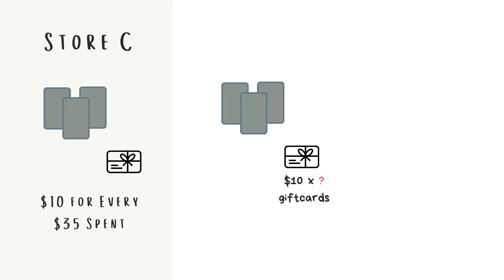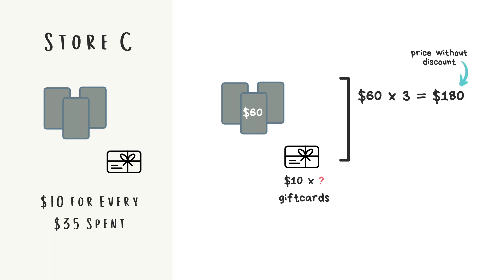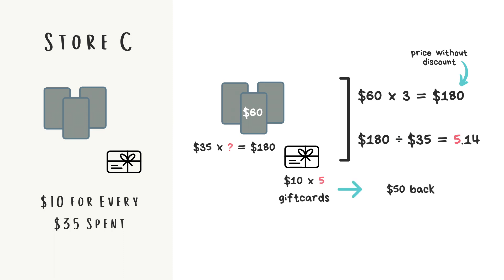Let's first calculate how much money you would get back. If we pay full price for three games at $180, let's see how many times $35 fits into $180, which is basically exactly what division is. That means we've spent $35 a little more than five times, and that means we'll get five $10 gift cards, for a total of $50 back. That's not even enough for a new game — basically, this is the same as buying three games and getting one almost free.